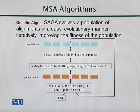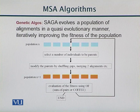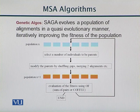Similarly, we have another algorithm for iterative alignment which is based on genetic algorithms. The technique used for this is SAGA — Sequence Alignment by Genetic Algorithms.